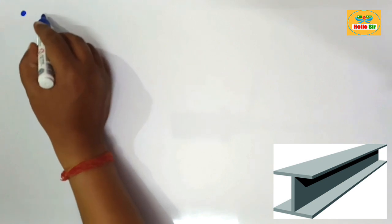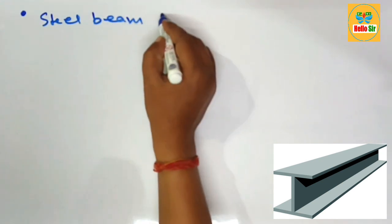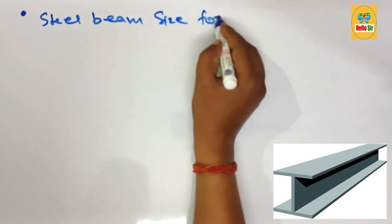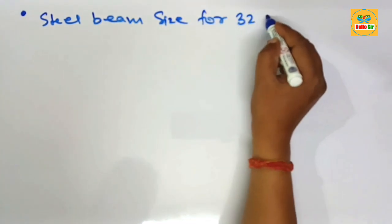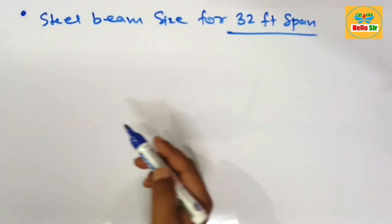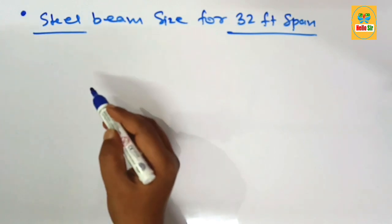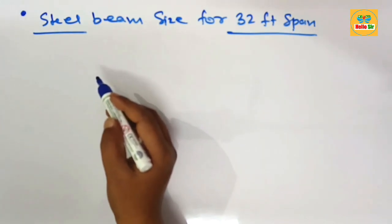Hi guys, today in this video we'll learn about steel beam size for 32 foot span. Here you have a span length of about 32 feet and the beam type is steel beam. Your question is what size steel beam do I need for 32 foot span?